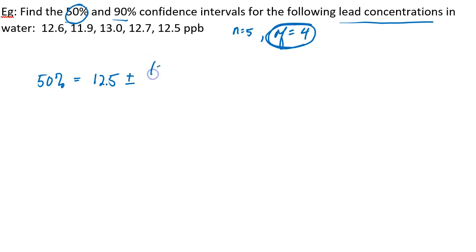So we'll plug that here, 0.741 times S, the standard deviation. I got 0.4, all divided by the square root of n, which is the square root of 5. So the 50% confidence interval is 12.5 plus or minus 0.1, and those units are parts per billion.